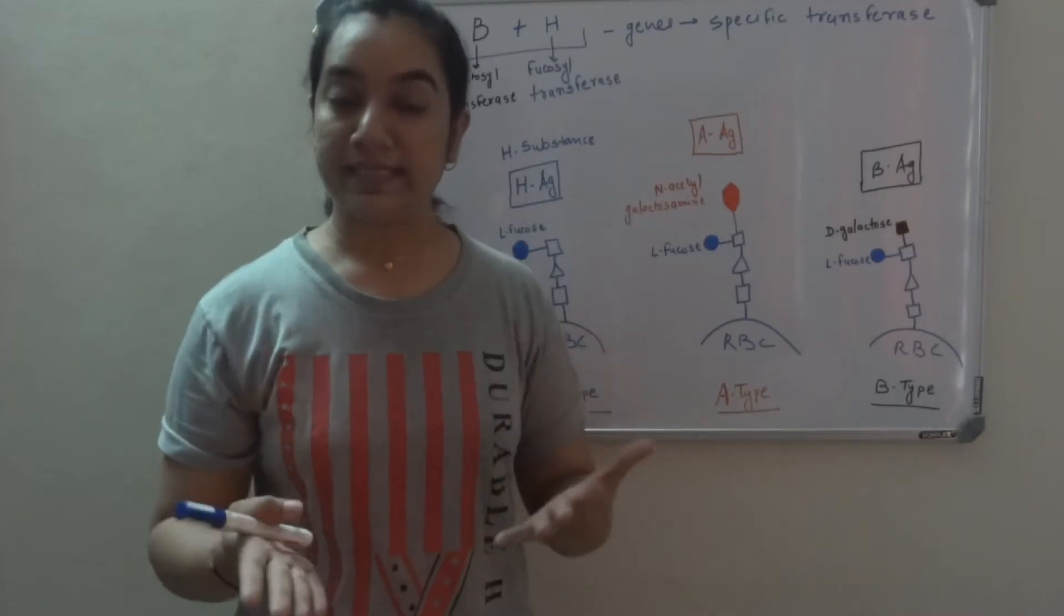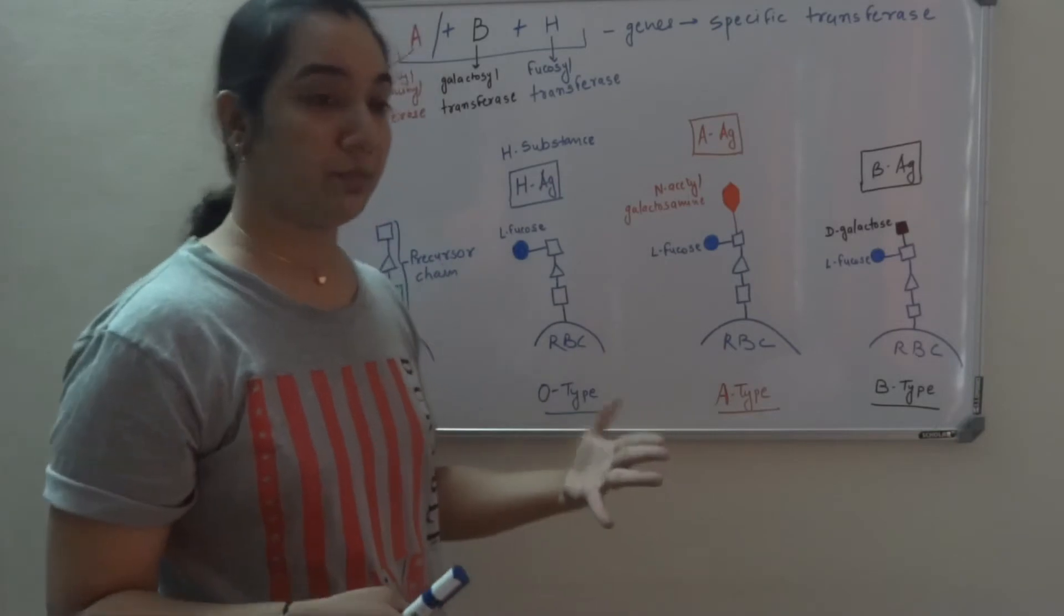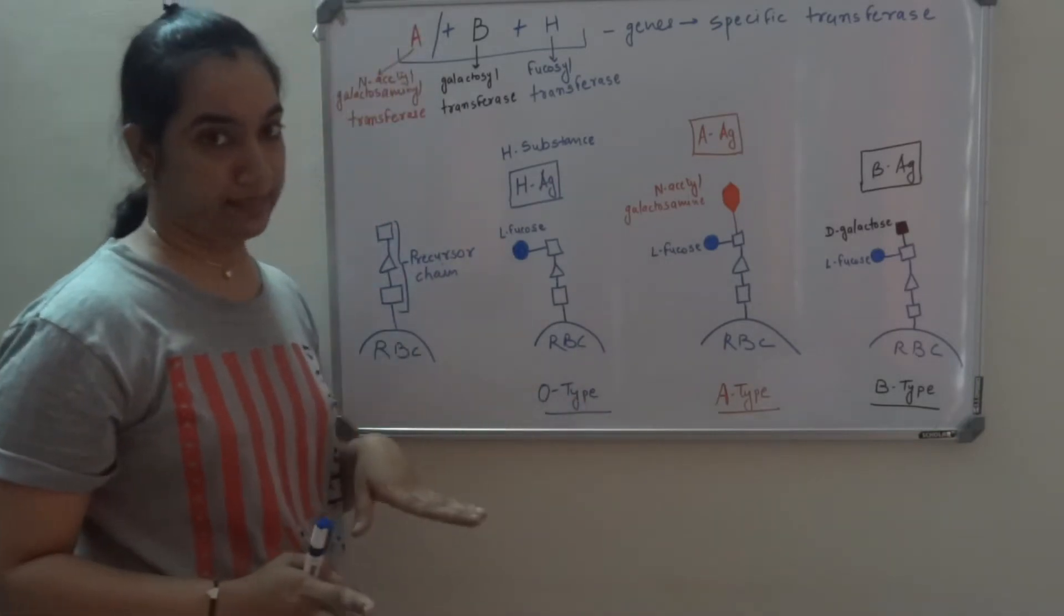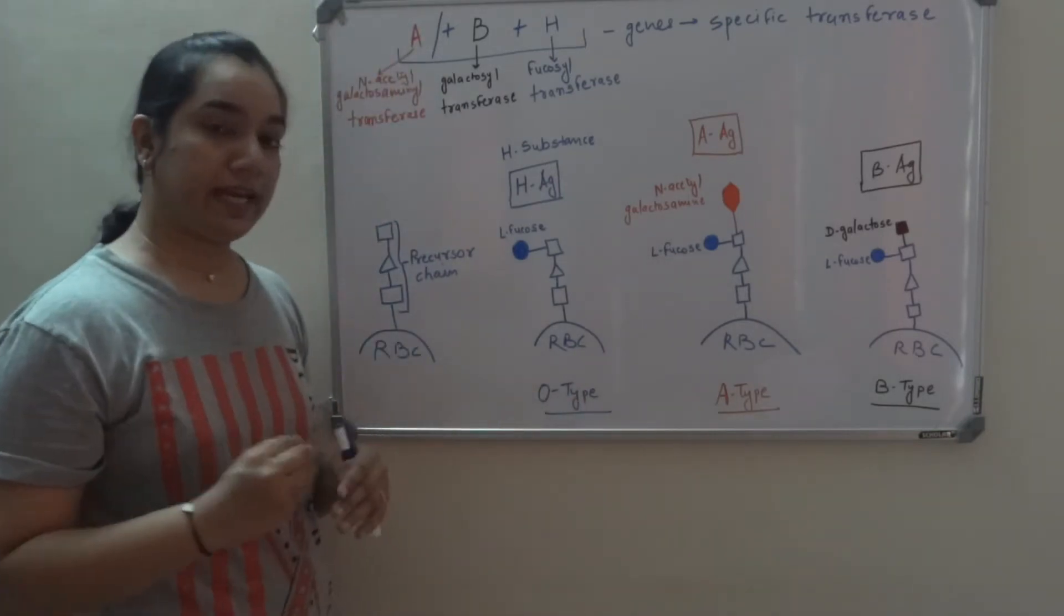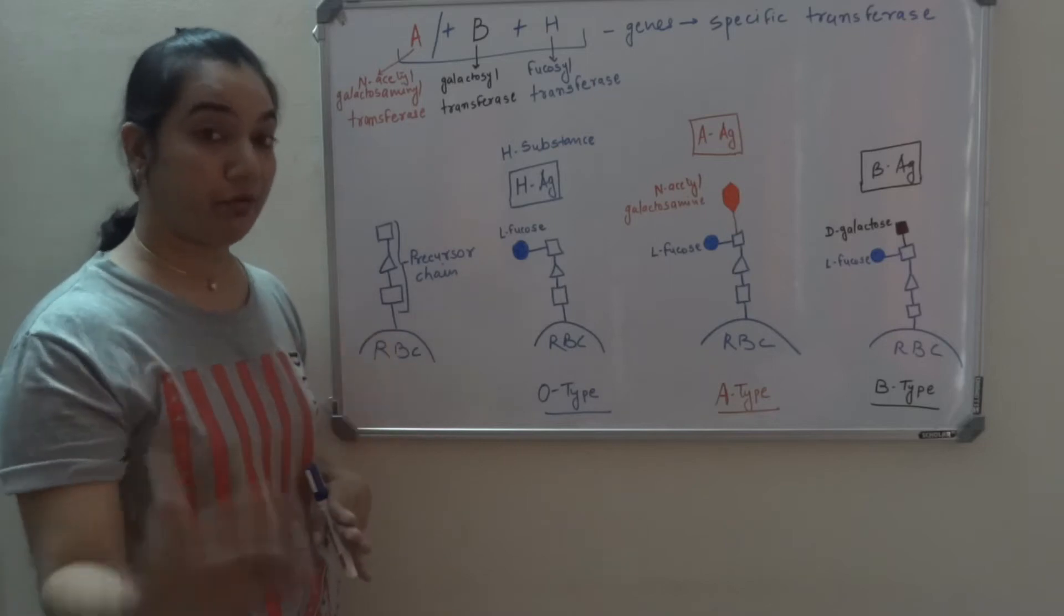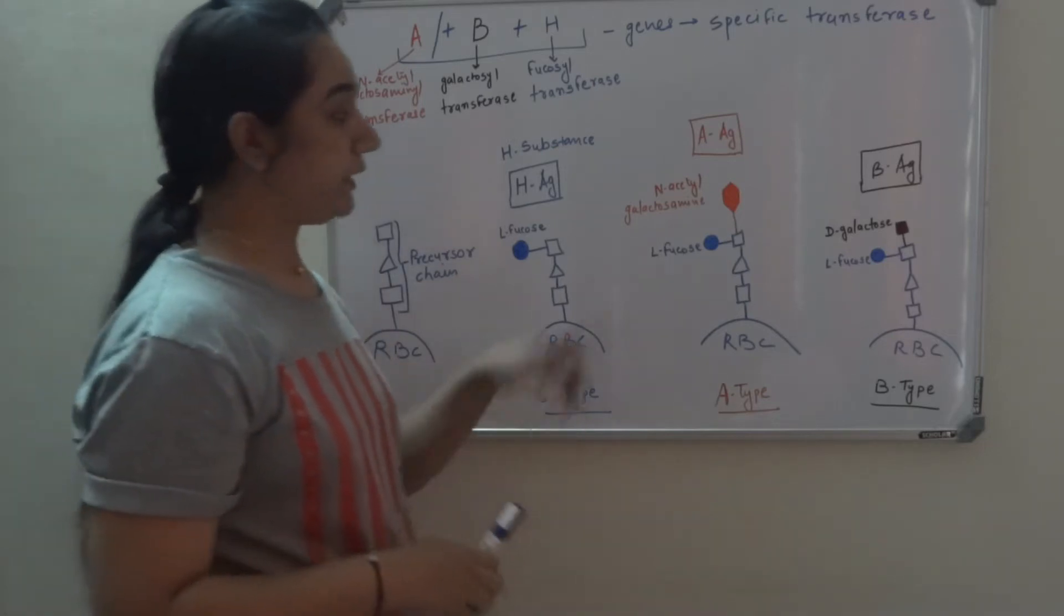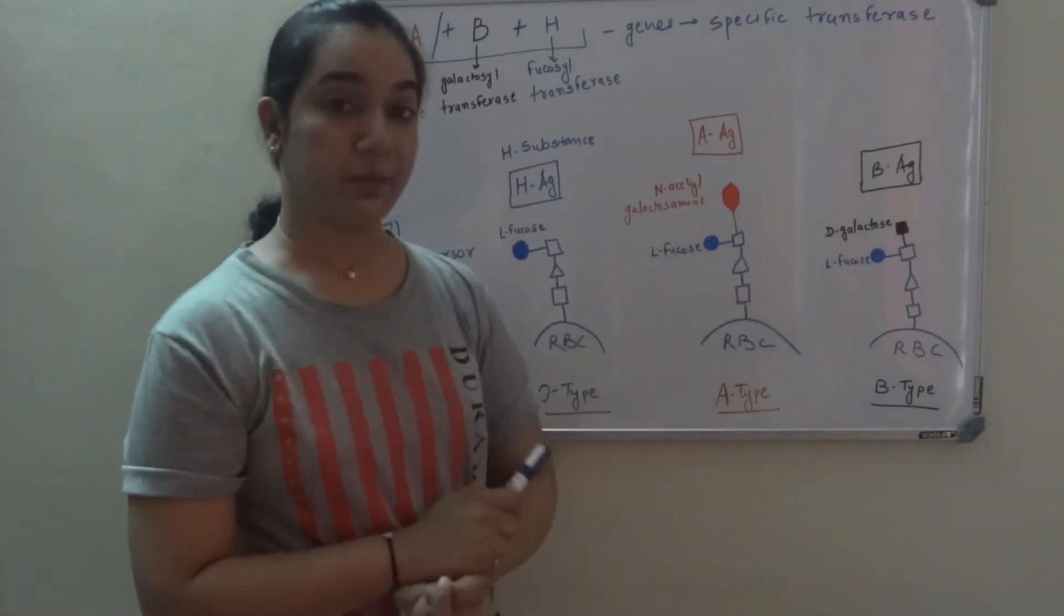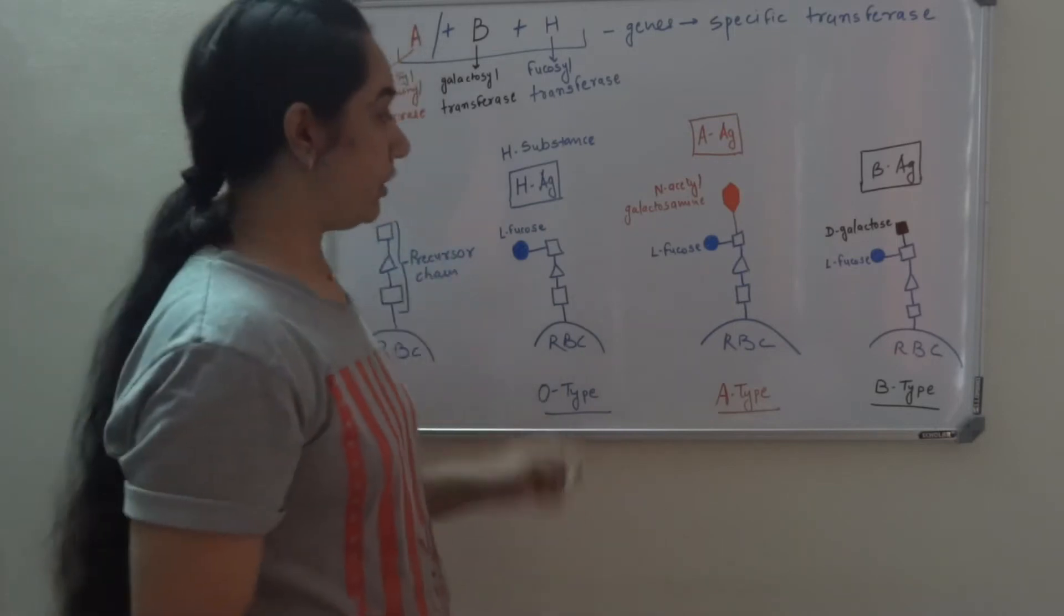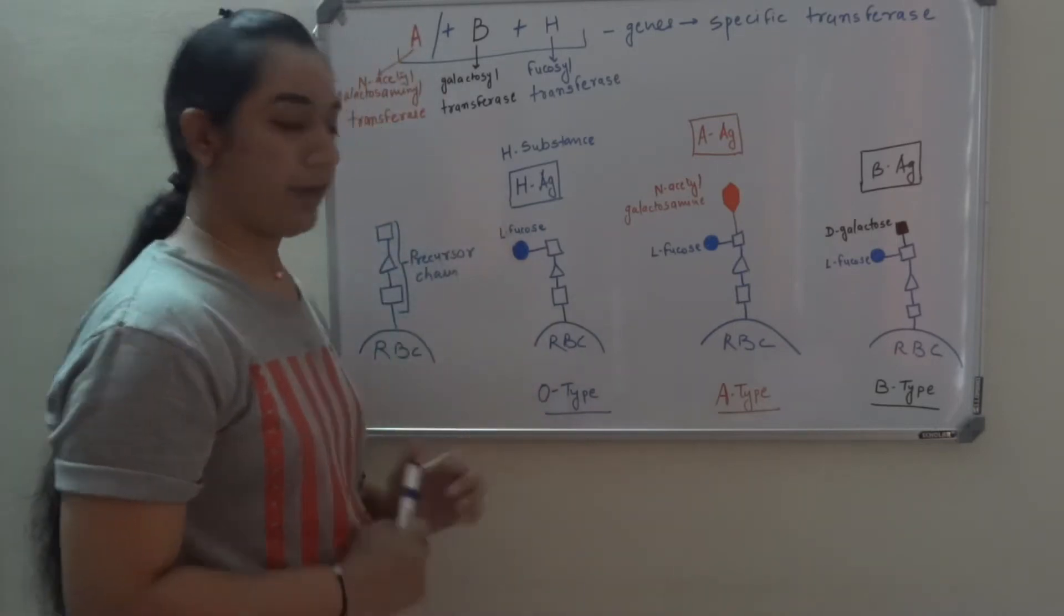So let's begin. To understand Bombay blood group, let's start briefly with our ABO blood grouping system. We know that we are classified as A, B, AB, or O based on specific type of carbohydrate moiety present on H substance of RBC.